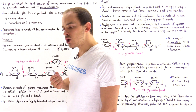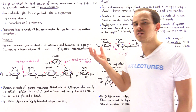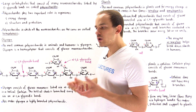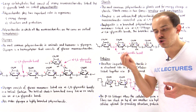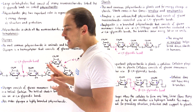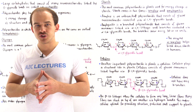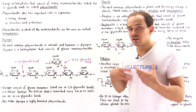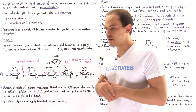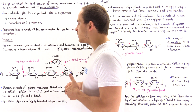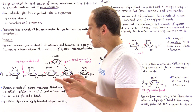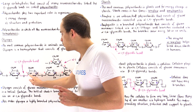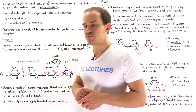Inside our cells, we store glucose in the glycogen form. Glycogen is essentially a homopolymer — a polysaccharide that consists of glucose molecules. Now there are two types of bonds within glycogen: the more common alpha-1,4 glycosidic bond and the less common alpha-1,6 glycosidic bond. We call this an alpha-1,4 glycosidic bond because it's a bond that exists between carbon number one on one glucose molecule and carbon number four on the adjacent glucose molecule.